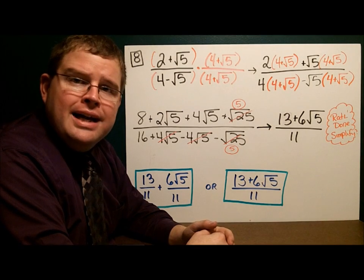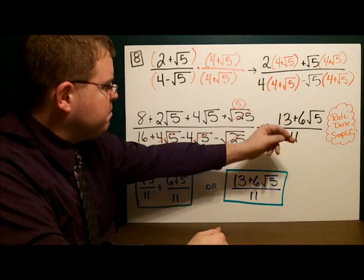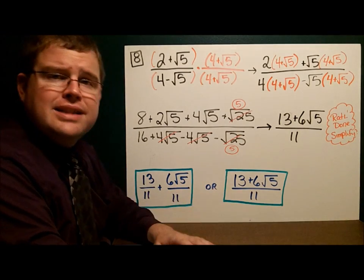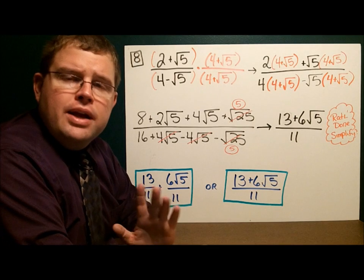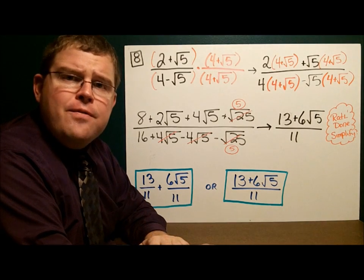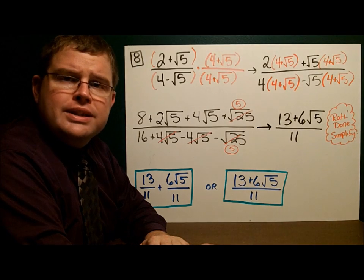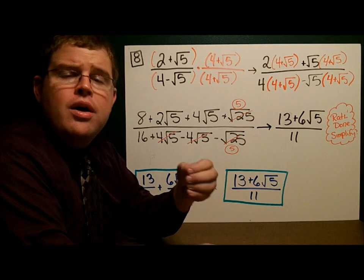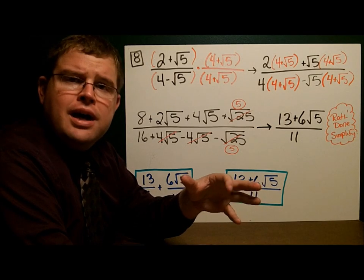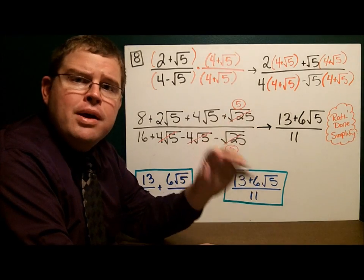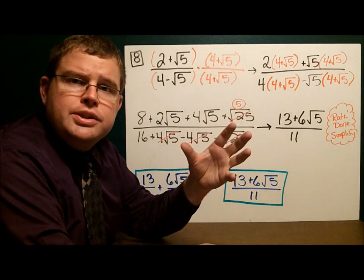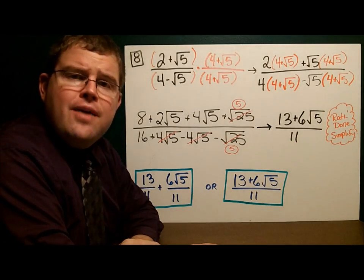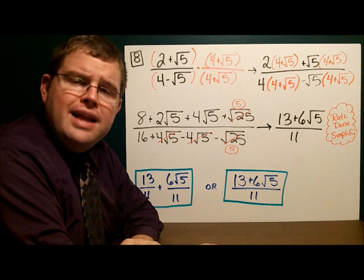I've finished rationalizing. Now let's simplify — break it apart. Nothing reduces, so I can either leave it as 13 plus 6 square roots of 5 over 11, or write it as a single fraction. Here's what you need to know: if you have a fraction where the denominator is a binomial — for example, 3 plus the square root of 5 — you can't have that square root down there, so you must use the conjugate of the denominator. Multiply the top and bottom by that conjugate, work through the steps, and then simplify your fraction following the rules we learned previously.